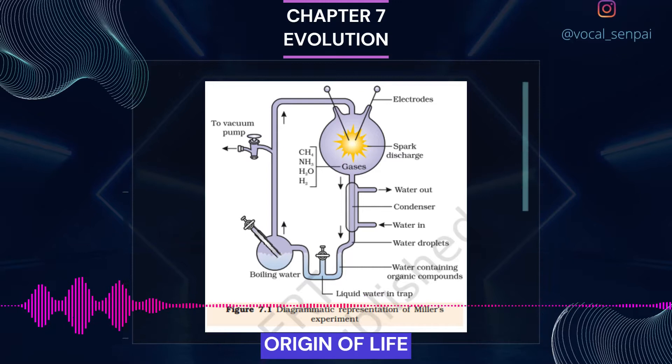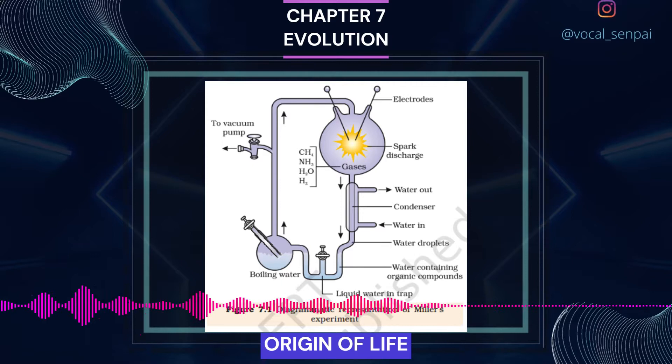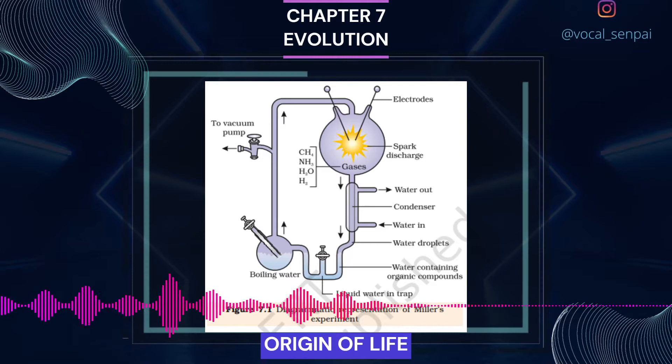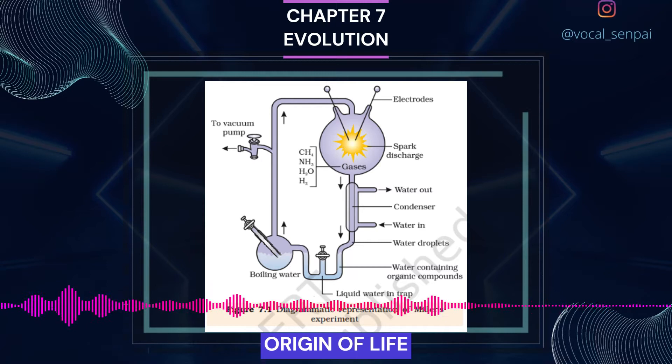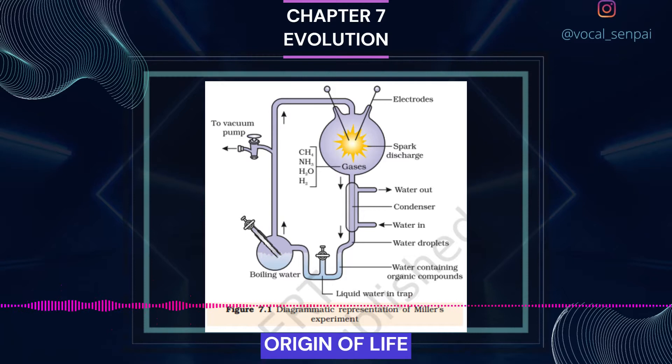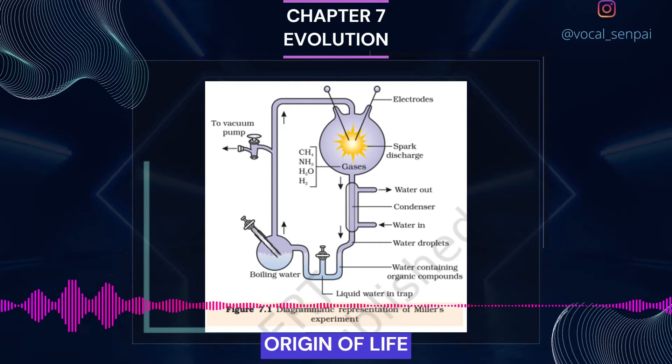However, this did not answer how the first life form came on Earth. Oparin of Russia and Haldane of England proposed that the first form of life could have come from pre-existing non-living organic molecules, e.g., RNA, protein, etc., and that formation of life was preceded by chemical evolution, i.e., formation of diverse organic molecules from inorganic constituents. The conditions on Earth were high temperature, volcanic storms, and a reducing atmosphere containing CH4, NH3, etc.